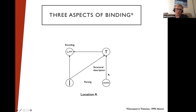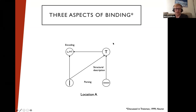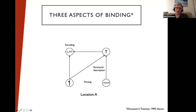Convolutional neural networks have a solution for parsing and structural description, but it's not a particularly robust one — they end up doing something like a bag-of-features detection or template search. Capsule networks have been motivated by trying to respect the spatial relations between low-level features when doing parsing and structural description, and also passing on spatial information — what they describe as pose — so that the same process can happen at the next layer, informing parsing and structural description of whatever the T may be part of.